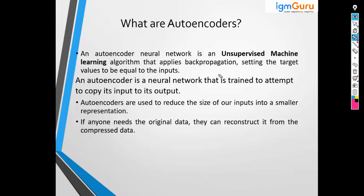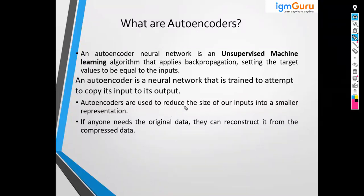As for the benefits, autoencoders are used to reduce the size of your inputs into a smaller representation. They also perform dimensionality reduction, similar to the way PCA works, though it is different from PCA. The idea is to take data in a large dimension and reduce it into a lower dimension.